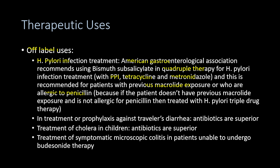Quadruple therapy is used if the patient has previous macrolide exposure or is allergic to penicillin. Otherwise, H. pylori triple therapy is used, which includes a proton pump inhibitor, amoxicillin or ampicillin, and clarithromycin. Bismuth is also used off-label for prophylaxis or treatment of traveler's diarrhea, treatment of cholera in children, and treatment of symptomatic microscopic colitis in patients unable to undergo budesonide therapy.